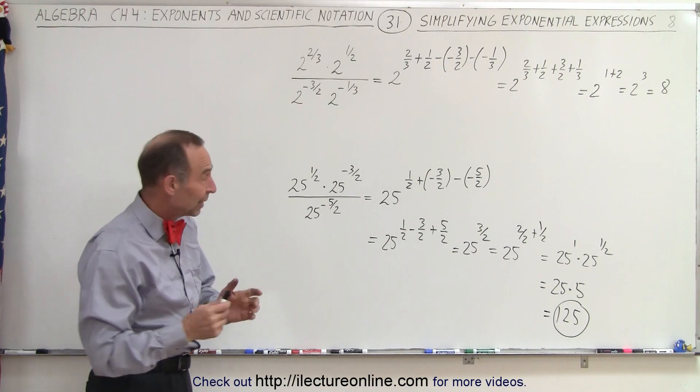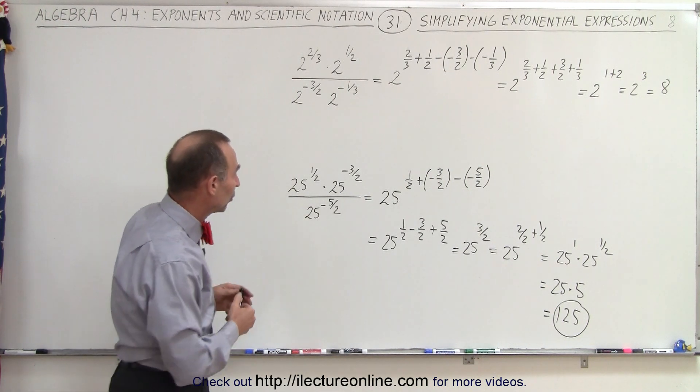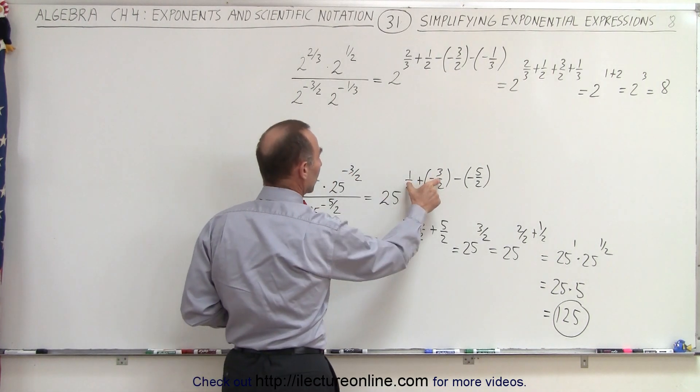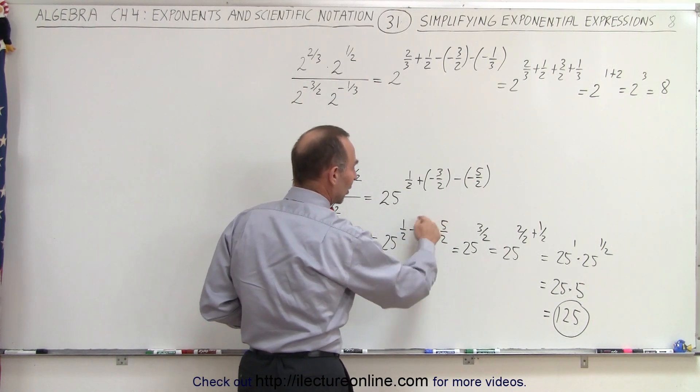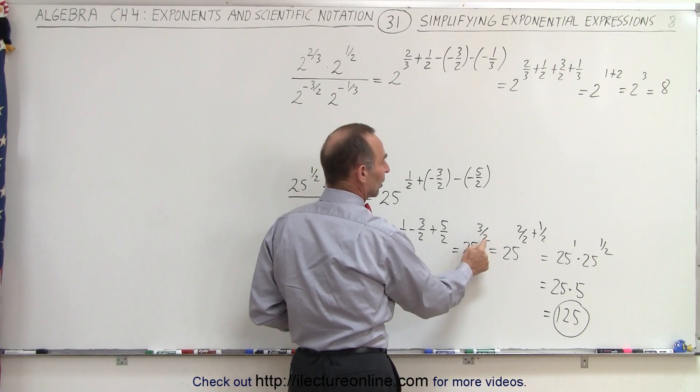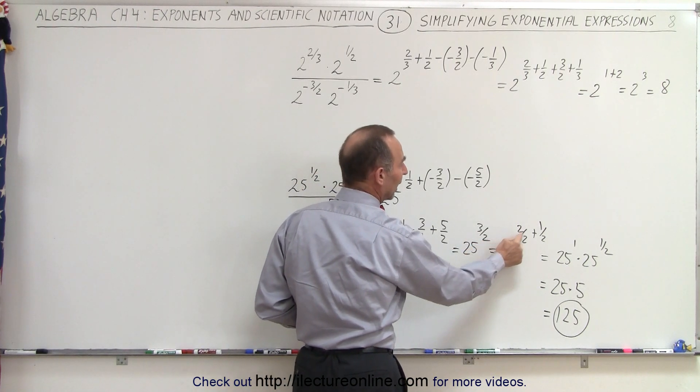So let's take a recap of this. Again, we use the rule where we add exponents when we're multiplying, subtract exponents when we're dividing. When we add all this up, we get a fractional exponent. We can separate that into a whole and a fraction.